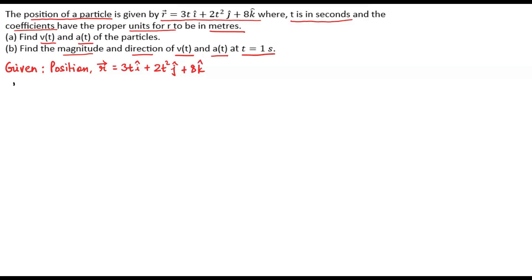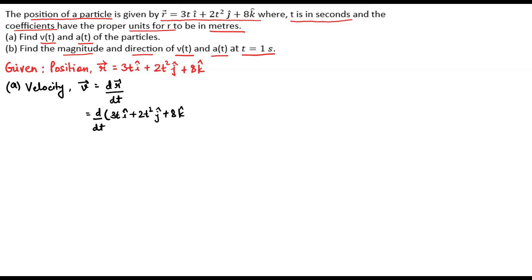Now for part a, the velocity is given by v vector equal to differentiation of position with respect to time. Substituting the position which is 3t i cap plus 2t squared j cap plus 8k cap, differentiation of 3t gives 3i cap, differentiation of 2t squared gives 4t j cap. This is the value for velocity: v vector equals 3i cap plus 4t j cap.